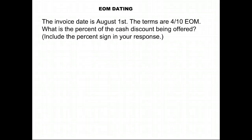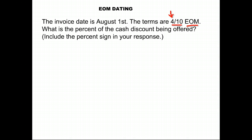Let's do some examples with end of month dating. The invoice date is August 1st and the terms are 4/10 EOM — that means end of month. What is the percent of cash discount being offered? Remember, the cash discount percent is the first number, so you're being offered a 4% cash discount.